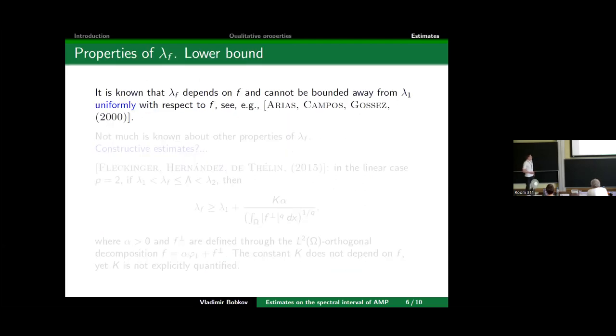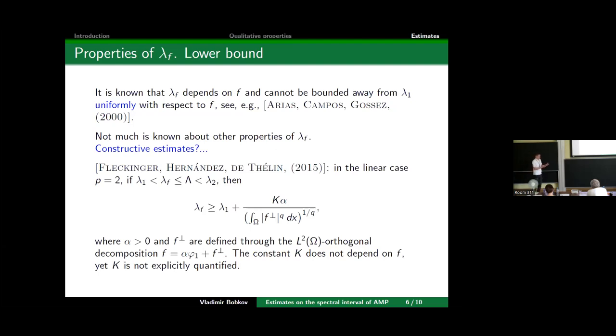The anti-maximum principle exists, so what is the next step? The next step for me is to investigate the properties of the interval of validity of the anti-maximum principle. More precisely, it falls down to investigating the properties of λ_f: how this λ_f depends on f. Up to now it's still not entirely known. Let me say just the only major thing which is known: that λ_f does depend on f and it cannot be bounded from below uniformly with respect to f. This is a result by Arias, Campos, and Gossez.